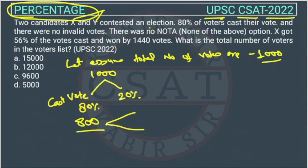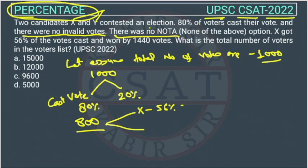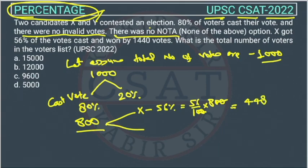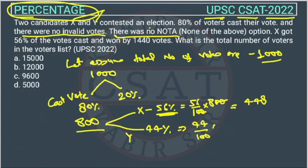Out of 800 votes cast, there is no NOTA and no invalid votes, so all votes go to X or Y. X gets 56% of 800, which is 448 votes. Y gets 44% of 800, which is 352 votes. The difference between X and Y is 96 votes.